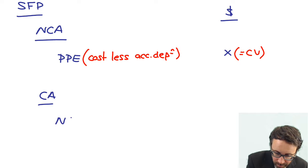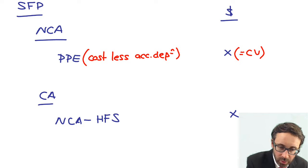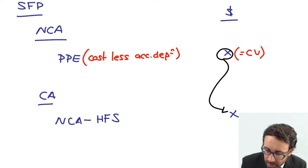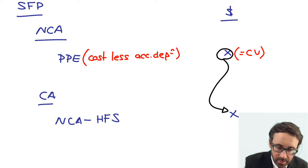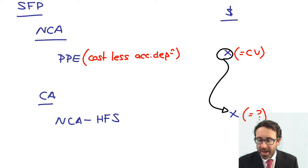So we have a separate category of current asset, which is non-current assets held for sale. We need to transfer an amount from PPE to non-current assets held for sale within current assets. But we need to look at what value it's going to be held at, and when we're allowed to do it, because when the asset is held as a non-current asset held for sale, it is no longer depreciated.